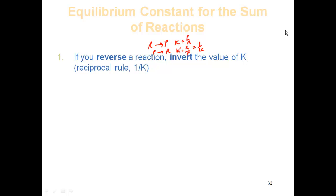So if you flip the reaction, you have to change the K to its reciprocal. That's only if you physically flip the reaction. You can still analyze a reaction going products to reactants as written — as we'll do in equilibrium problems — but if you physically flip it, you must take the reciprocal of K.